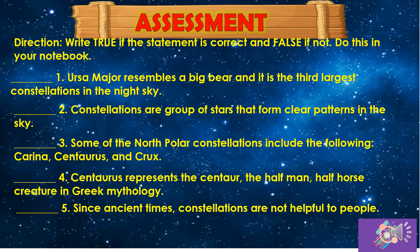For the assessment, write true if the statement is correct and false if not. Do this in your notebook. Number 1: Ursa Major resembles a big bear and it is the third largest constellation in the night sky. Number 2: Constellations are a group of stars that form clear patterns in the sky. Number 3: Some of the north polar constellations include Carina, Centaurus, and Crux. Number 4: Centaurus represents the centaur, the half-man, half-horse creature in Greek mythology. Number 5: Since ancient times, constellations are not helpful to people.